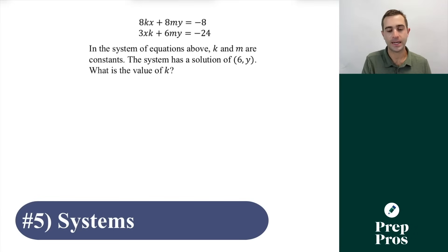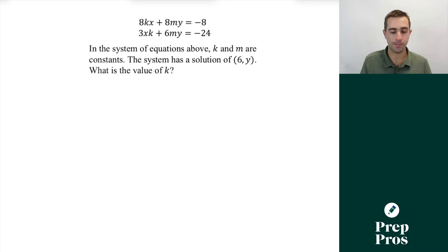The next thing you're going to see on the SAT are questions where they're going to introduce variables that are going to block you from simply using Desmos to graph and solve them. Here we see in the system of equations above k and m are constants. The system has a solution of 6 comma y. What is the value of k? We can plug in 6 to help us solve for k where x is, but we need to clear out these my's.